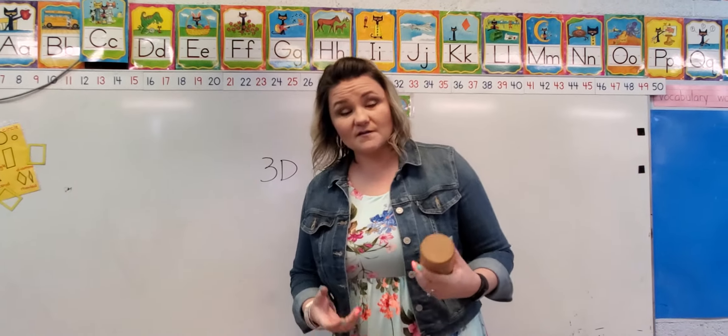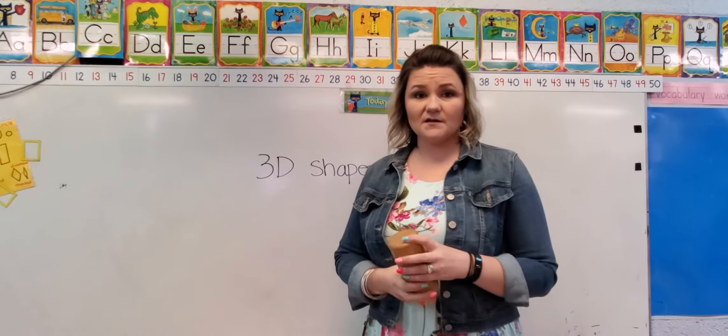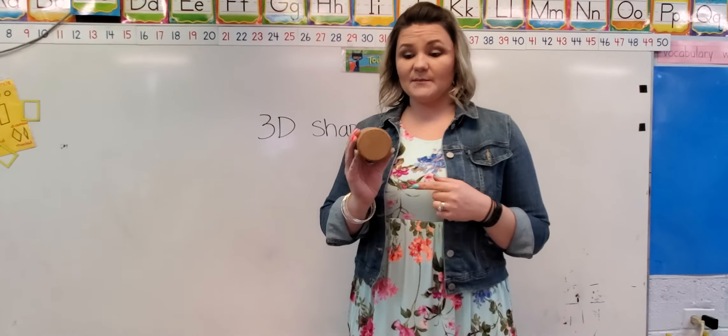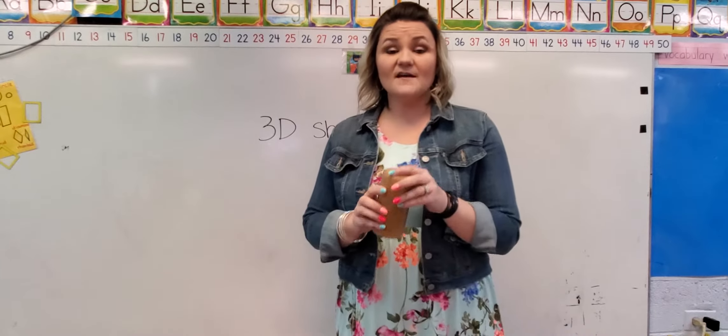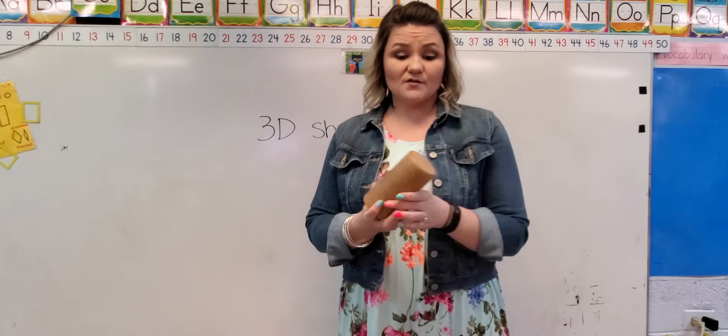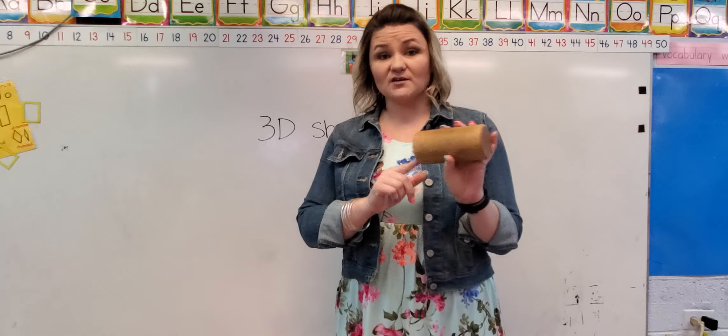The 3D shapes that we most typically focus on in kindergarten is going to be your cylinder. You're going to talk about the faces on a cylinder. It's got two round faces. Faces is just, simply put, it's the flat part. So this one obviously has two and they are circular shaped.